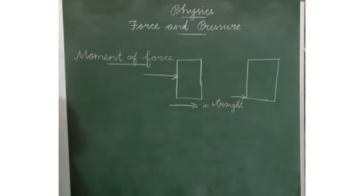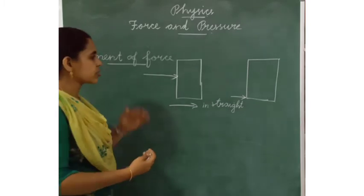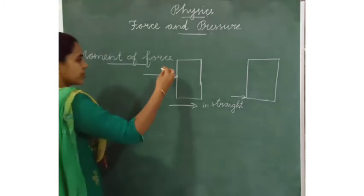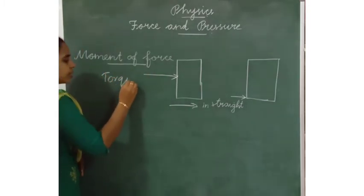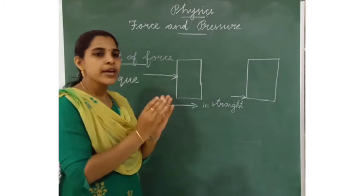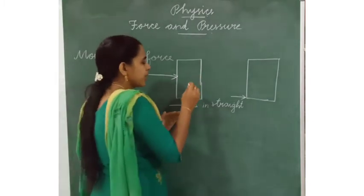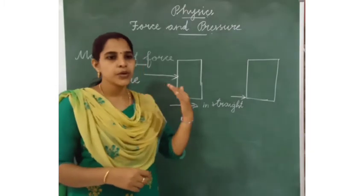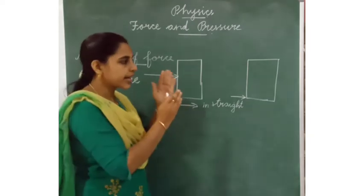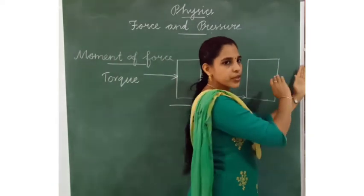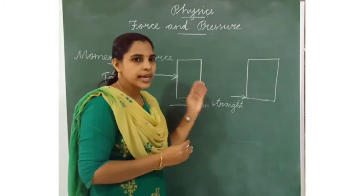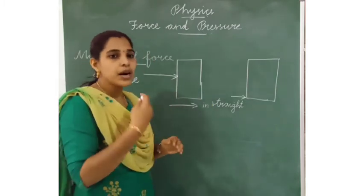Next one is moment of force. Moment of force means the turning effect of force. The turning effect of force is called moment of force. It will have one fixed point. For example, when we open or close the door, it will have a fixed point — the hinge. One hinge is there at the side of the door. When we open or close the door using the hinge, it is the fulcrum or pivot.